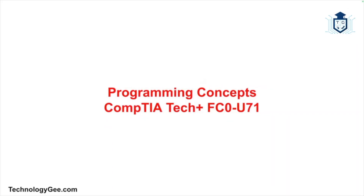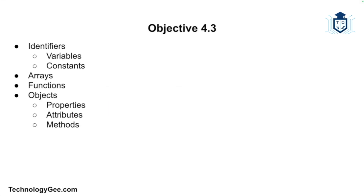What's up everybody, this is Tech G back with another video to help you successfully pass the CompTIA Tech Plus certification exam. In this video we'll cover some fundamental ideas that are essential to programming, such as identifiers including variables and constants, arrays, functions, and objects which encompass properties, attributes, and methods. Understanding these core concepts will give you a strong foundation as you prepare for the exam.